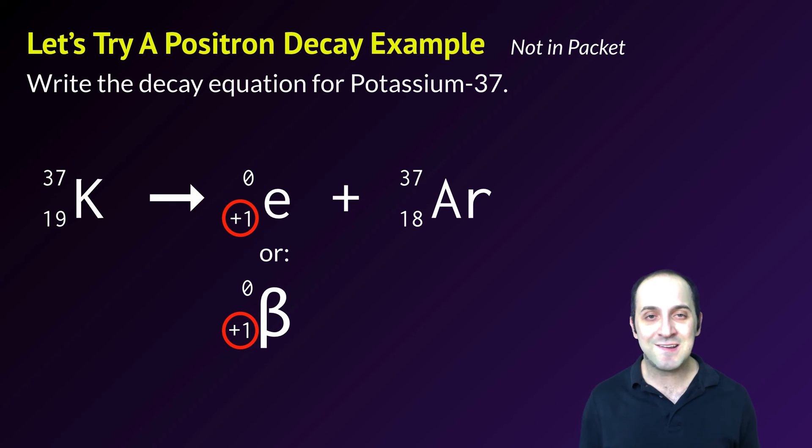Notice that in this case it almost looks like a beta particle, but it's positive 1 instead of negative 1. That is a major difference - it's the only difference between a positron and a beta particle, so it's something to be careful of.